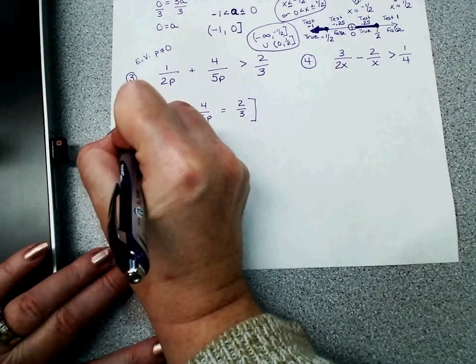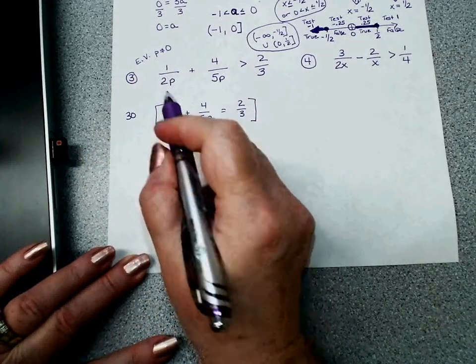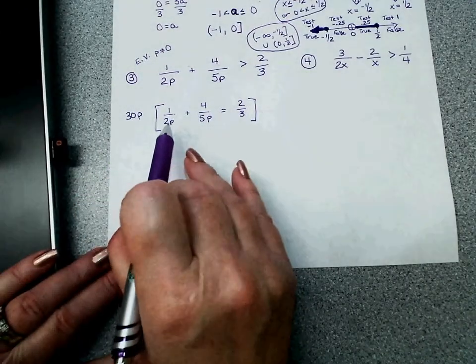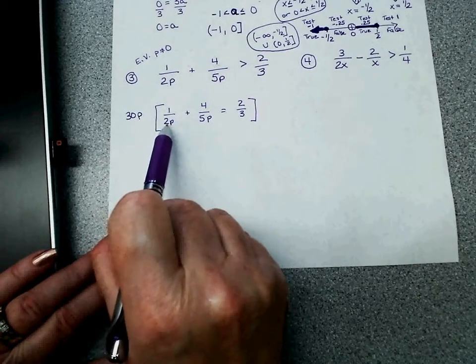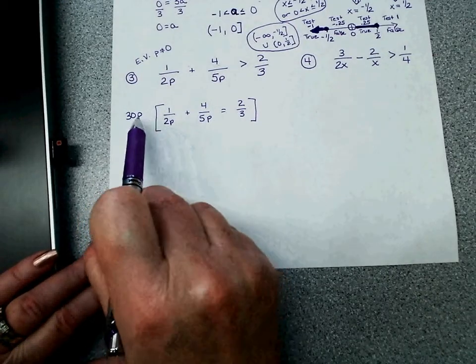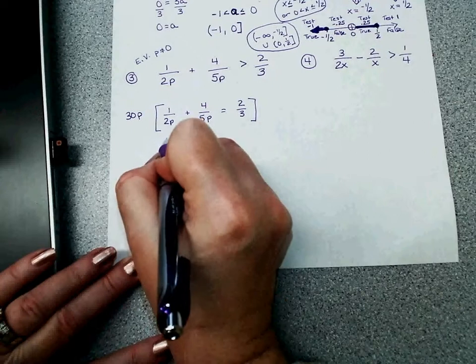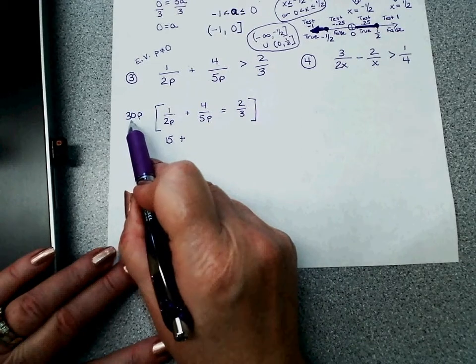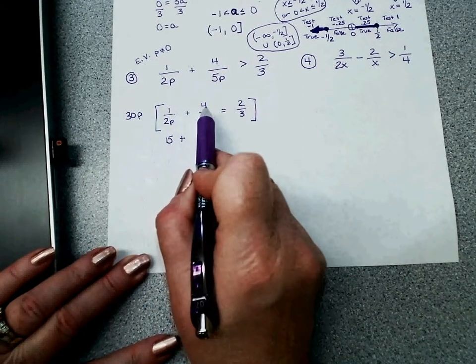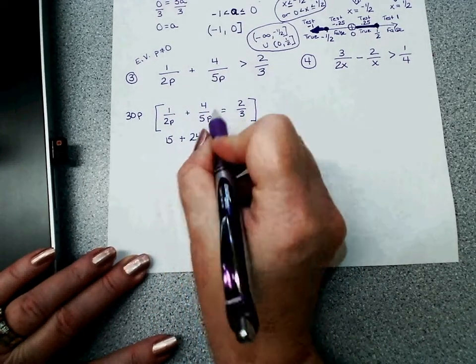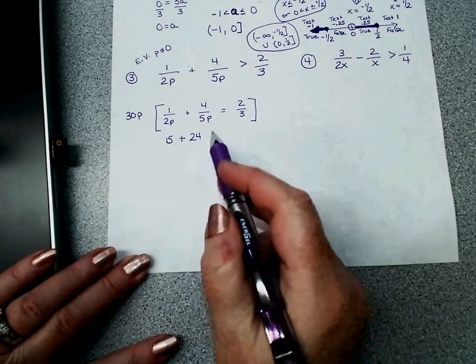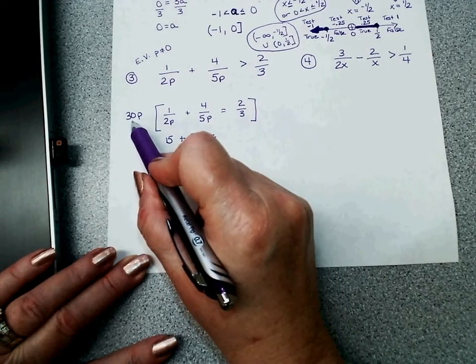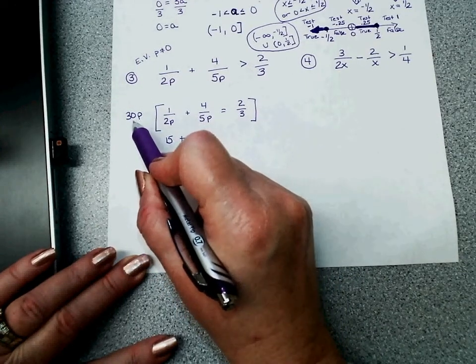So I need a 30 out here and I have to have a p because these have p's. 2 goes into 30 fifteen times. The p's cancel. 15 times 1 is 15. The 5 goes into 30 six times. 6 times 4 is 24. Now let's look at the p's. That p and that p cancel, so just got 24. 3 goes into 30 ten times. The p goes into 30 ten times. The p does not cancel. 10p times 2 is 20p.